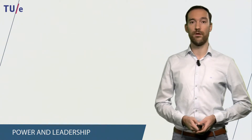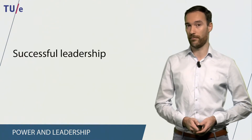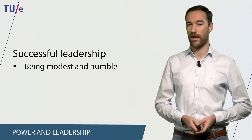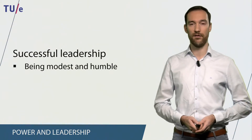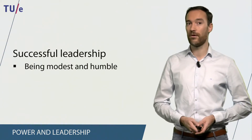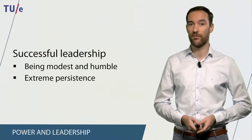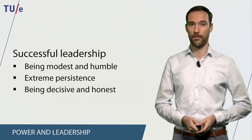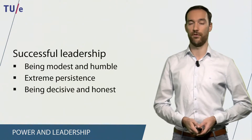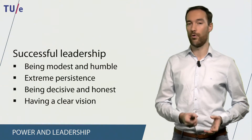Leadership is always necessary when you have a big group, and there are a number of criteria which define successful or unsuccessful leadership. Successful leadership depends on the leader being modest and humble — in the past we thought a leader had to be proud and very present, but it is more successful to be modest. Successful leadership also occurs when the leader is extremely persistent in following their values and norms, is decisive and honest, and has a clear vision for the future.